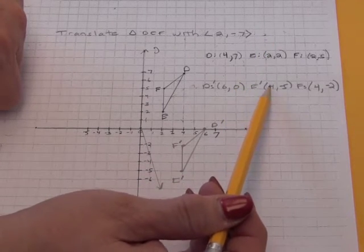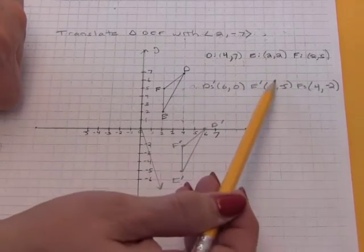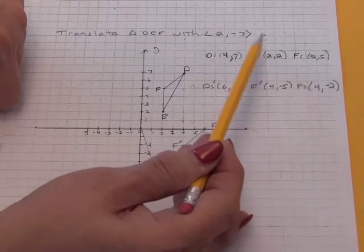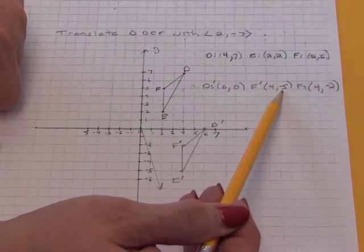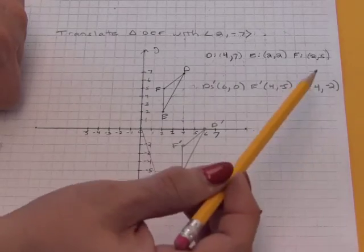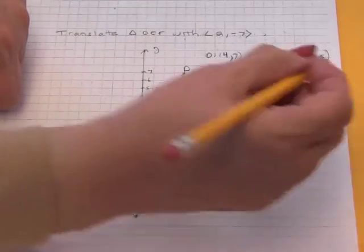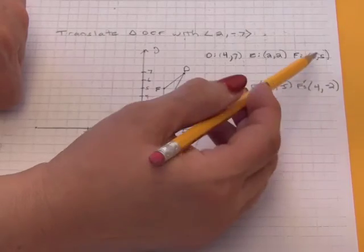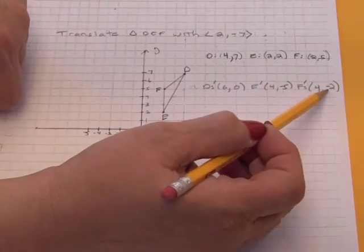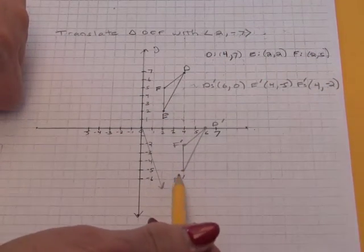I did the same thing for the other points. 2 plus 2 is 4. 2 minus 7 is negative 5. And finally, for f prime, 2 plus 2 is 4. 5 minus 7 is negative 2. And they're graphed over here.